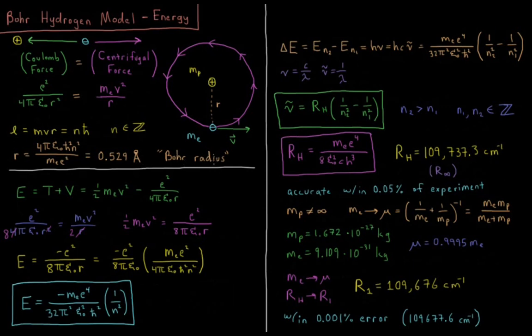Our energy E is going to be our kinetic energy T plus potential energy V. Kinetic energy is 1 half mass times velocity squared. The potential energy is the Coulomb potential attracting the electron to the nucleus, that's negative charge 1 times charge 2 over 4 pi epsilon naught times distance. Charge 1 is plus e, charge 2 is minus e, so minus e squared distance is r, so we have over 4 pi epsilon naught r.